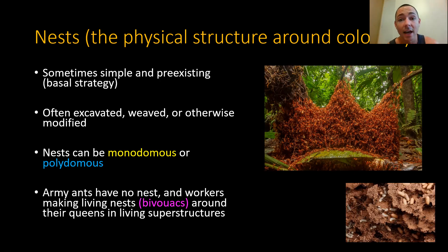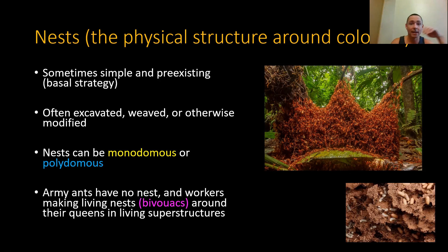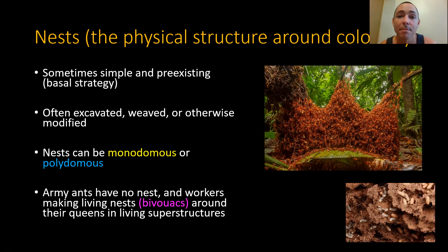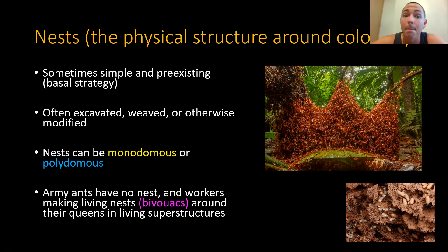Sometimes ants have not just one nest but many nests. A monodomous species has a single nest — whether simple or complex, it's one continuous nest. Many species are polydomous, though: one colony, one queen, or in a polygynous society multiple queens working together, can have many nests with some traffic moving between them — basically decentralized nest complexity. Instead of having many chambers in one area, they distribute that complexity across many little sub-nests throughout an area.